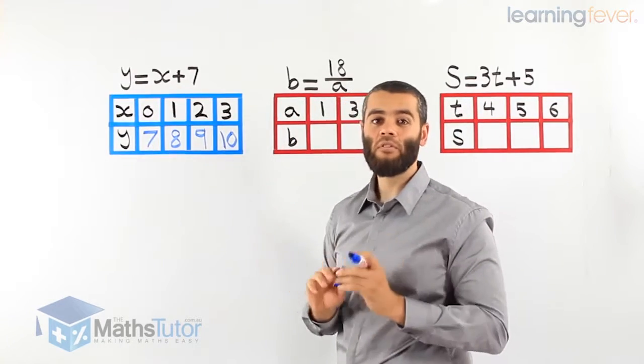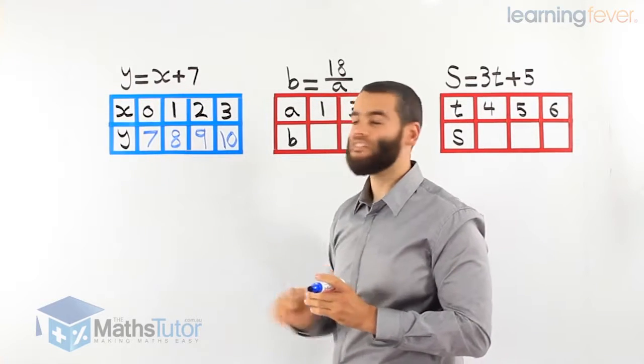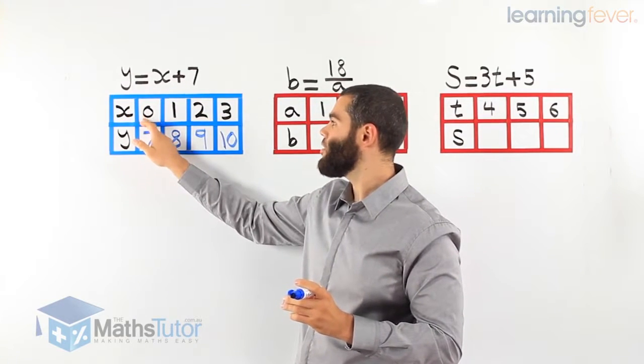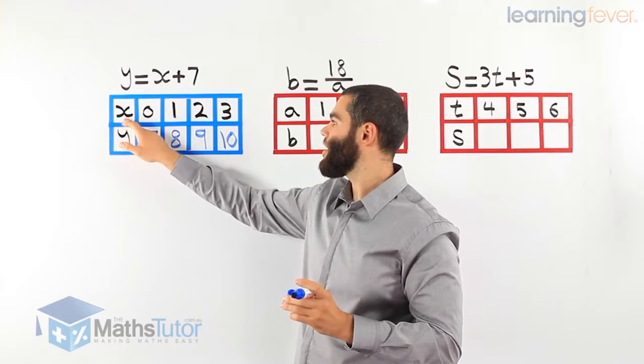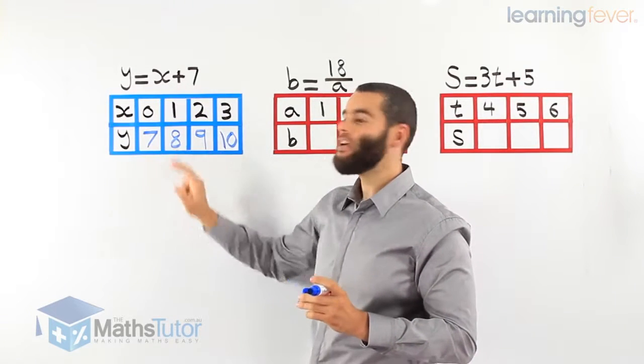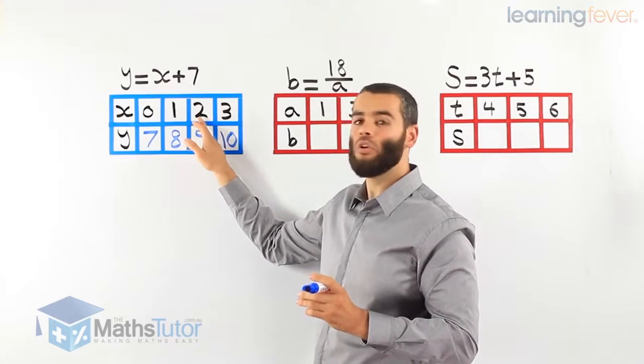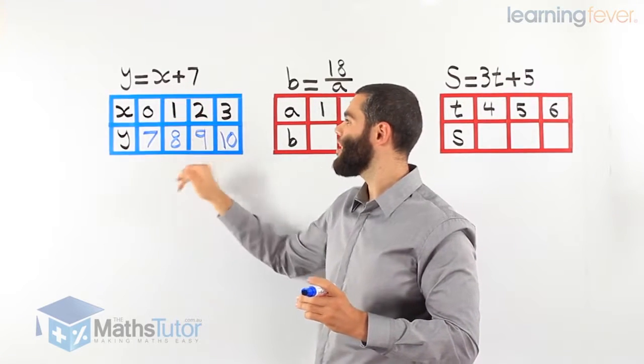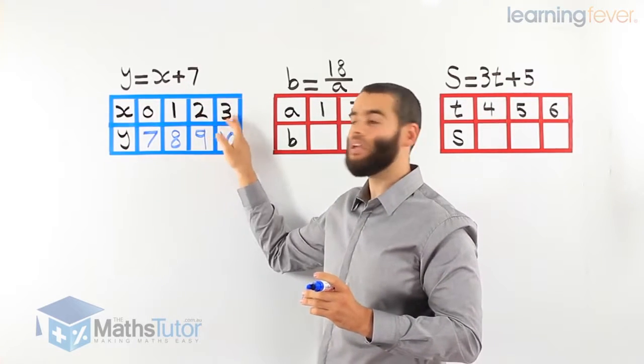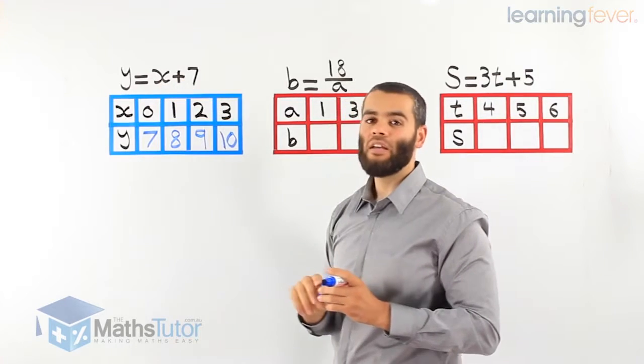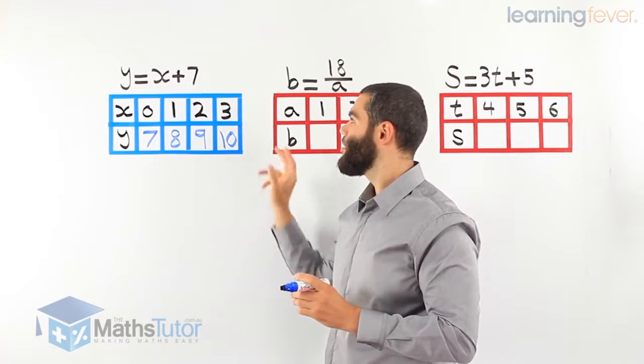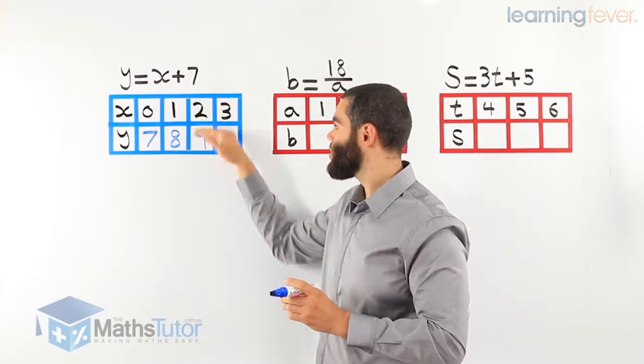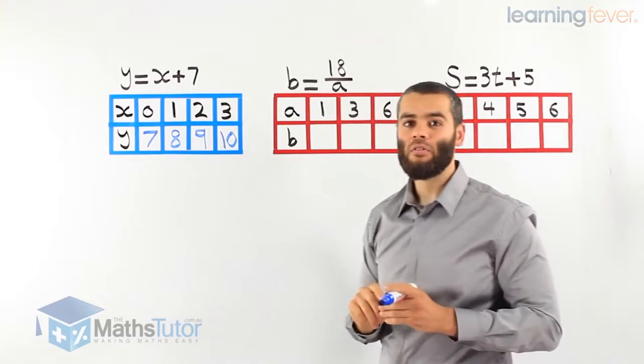So here we've just completed a table of values using the rule given to us. We replaced x with 0 and got 7. We replaced x with 1, 1 plus 7 is 8. We replaced x with 2, 2 plus 7 is 9. And we replaced x with 3, 3 plus 7 is 10. Using substitution, we worked out and completed the table of values.